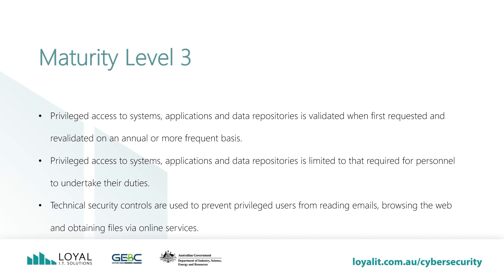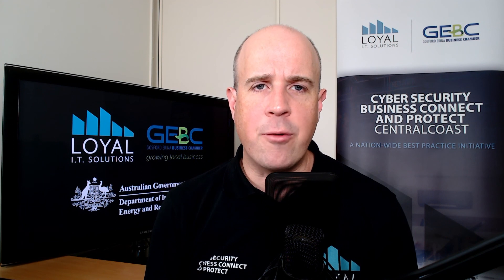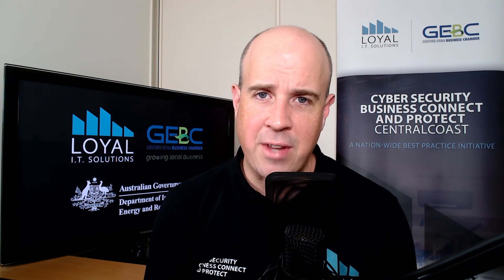It's important that the network administrator role is not assigned to a manager or staff member — this would be very bad practice. Technical security controls are used to prevent privileged users from reading emails, browsing the web and obtaining files via online services. Restrict access for privileged accounts by issuing administrators a standard user account in addition to separate privileged and unprivileged administrator accounts for administrative purposes. So what did we learn? The four main types of accounts: domain admin and users versus local admin and users. Standard user accounts can't install or run programs without the admin password. We learnt the least privileged principle. We need to audit users and groups periodically. To be secure, we need to use a decentralized or delegated administration model. This is a very complex topic with many different moving parts — we'll get further into the weeds in the premium membership. Thank you for joining me for a look at restricting administrative privileges. You can contact me via email, Instagram, Facebook or Twitter. Until next time, stay safe online.